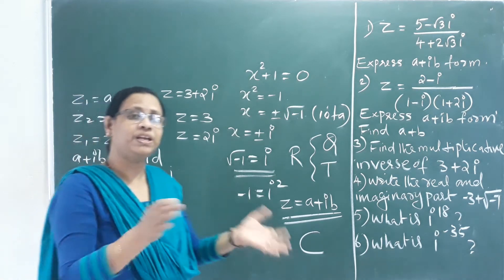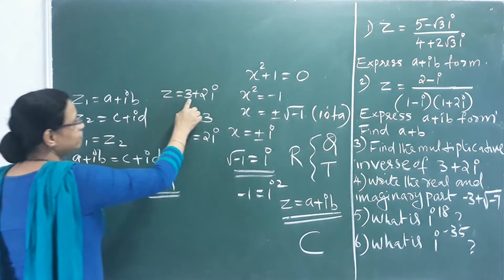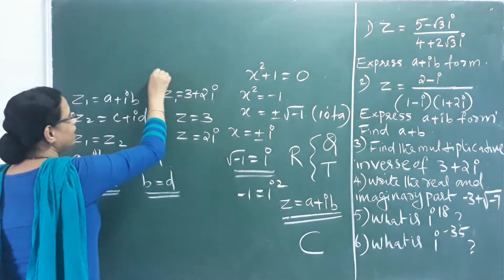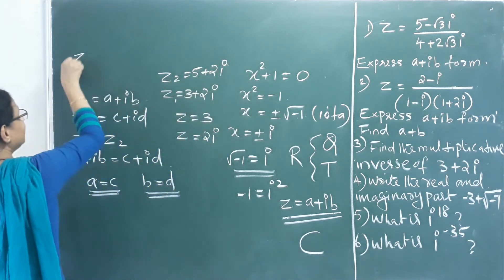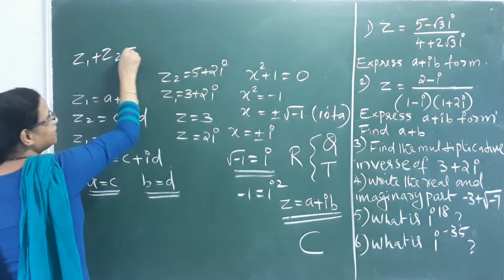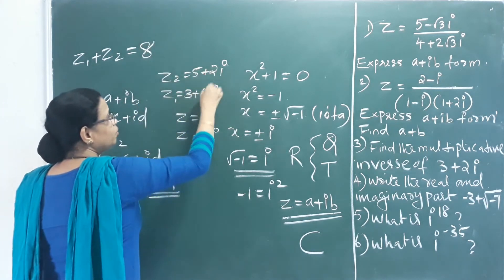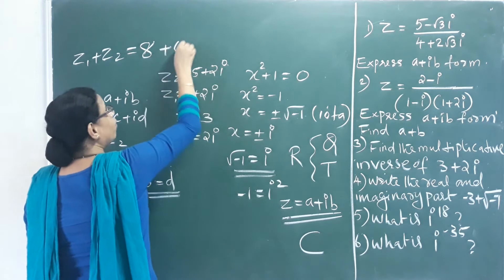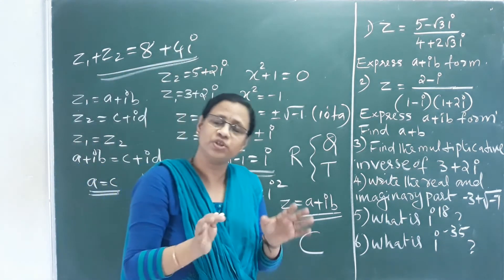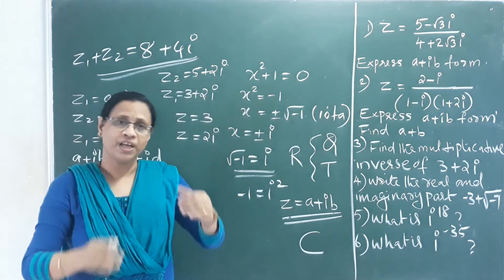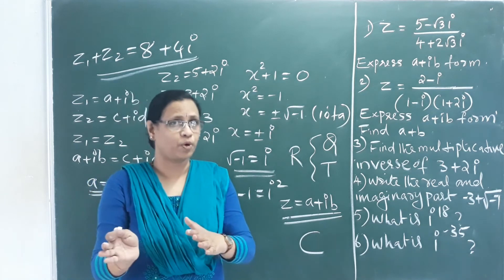Now, addition of complex numbers. If Z₁ = 3 + 2i and Z₂ = 5 + 2i, then Z₁ + Z₂: real parts add to give 8, imaginary parts add to give 4i. So Z₁ + Z₂ = 8 + 4i. Addition is simply combining like parts.